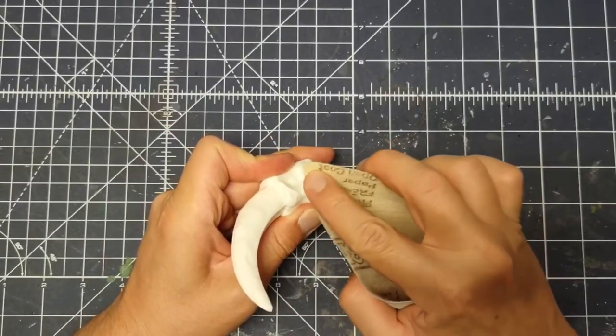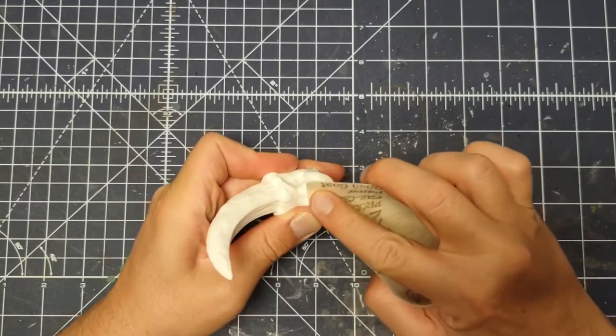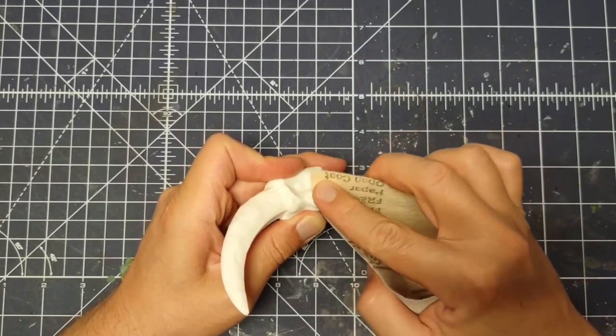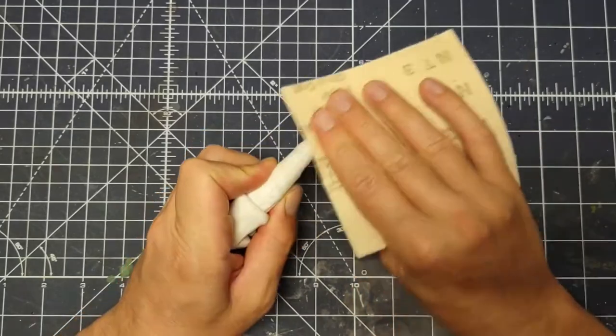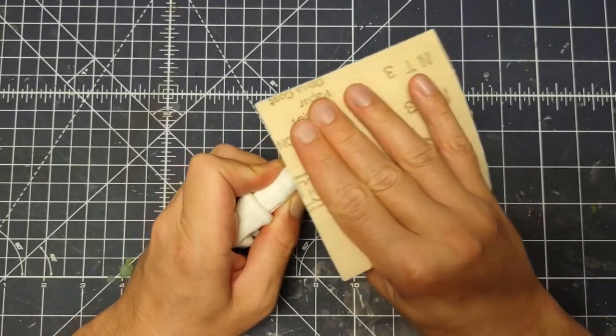Once the claw was assembled, I used a piece of sandpaper to take off any excess filament left by the printer's nozzle, as well as to smooth out the edge of the joint.